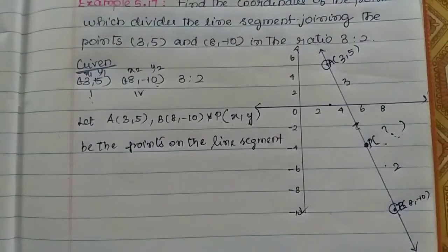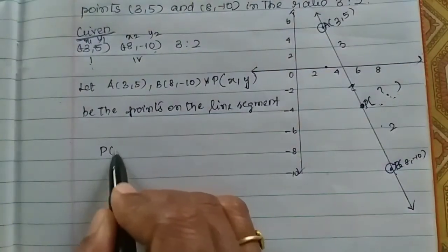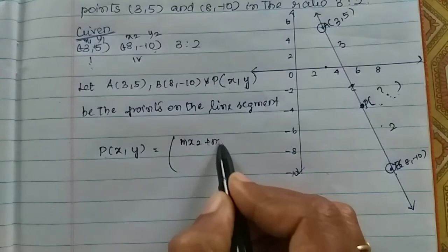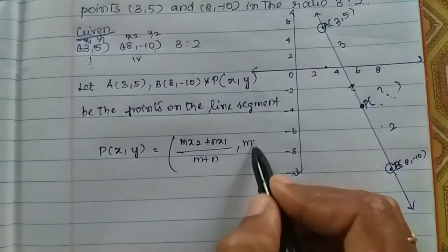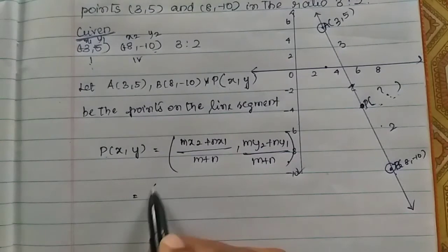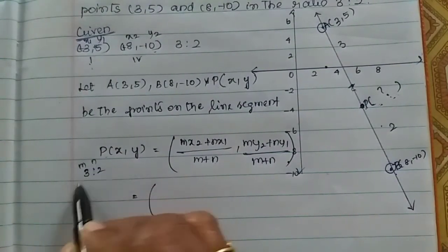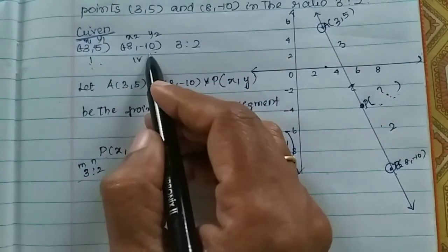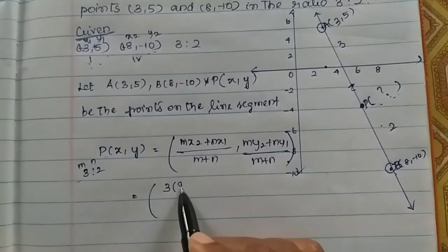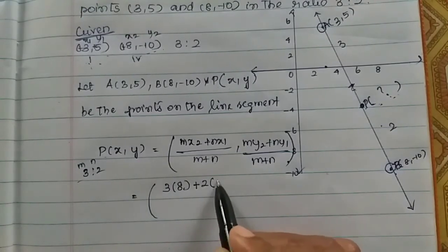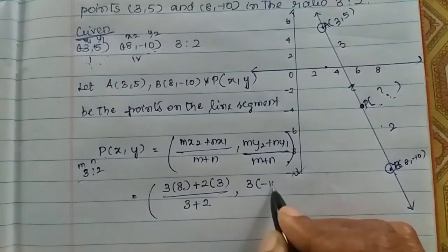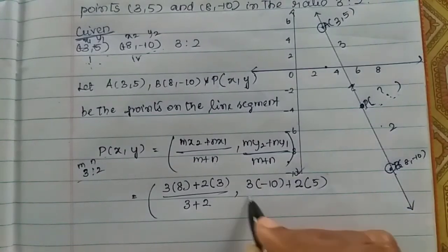Using the section formula: x = mx2 plus nx1 divided by m plus n, and y = my2 plus ny1 divided by m plus n. Here m is 3 and n is 2, x1y1 is (3, 5), x2y2 is (8, -10). Substituting: x = (3×8 plus 2×3) divided by (3 plus 2), and y = (3×(−10) plus 2×5) divided by (3 plus 2).